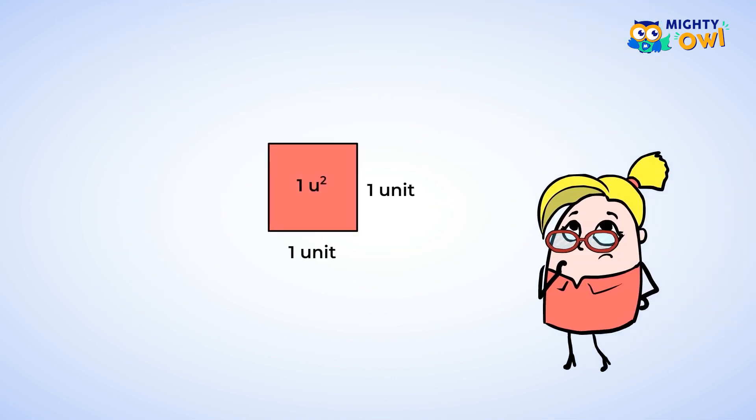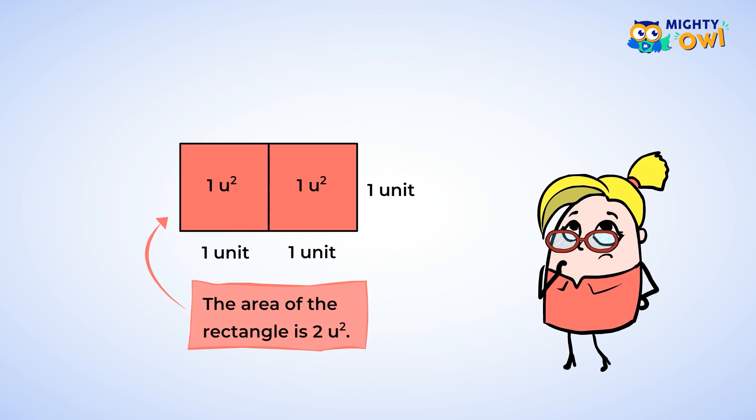What happens if we add another one? Let's add another one. Now there are two unit squares. This rectangle has an area of two square units.